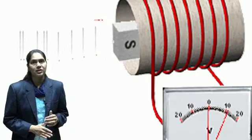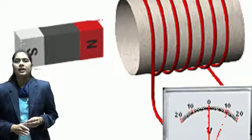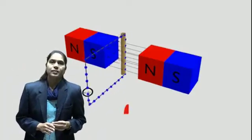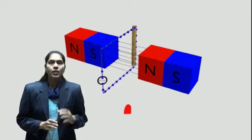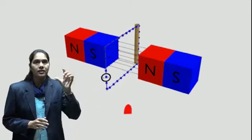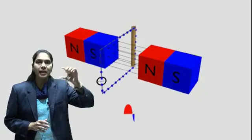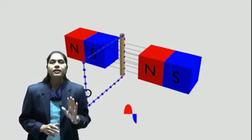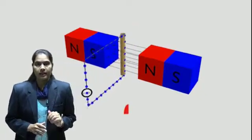What is the statement of Faraday's Law of Electromagnetic Induction? Faraday's Law of Electromagnetic Induction states that whenever a current-carrying conductor is placed in a changing magnetic field, an EMF gets induced in that conductor.